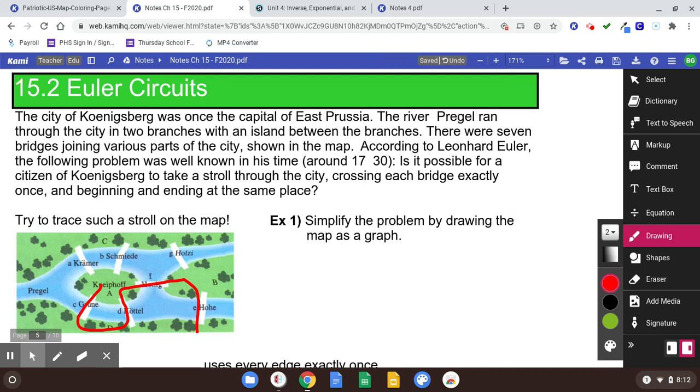Can't cross a bridge more than once. You have to cross it exactly once. Sure doesn't look like it's going to be possible. You can try it and try it, but I don't think it's going to work. But we can prove it using graph theory.